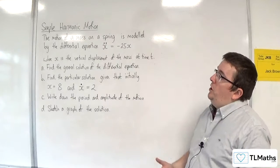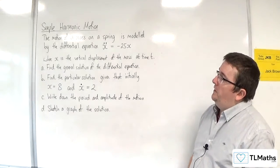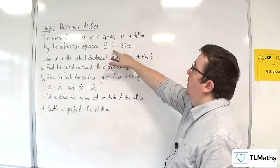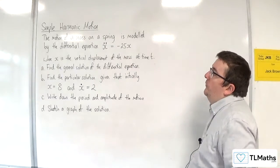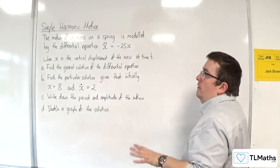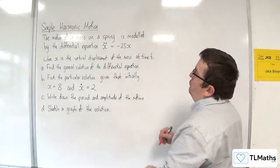In this example, the motion of a mass on a spring is modeled by the differential equation x double dot, so d²x/dt², is equal to minus 25x, where x is the vertical displacement of the mass at time t. Part A, find the general solution of the differential equation.